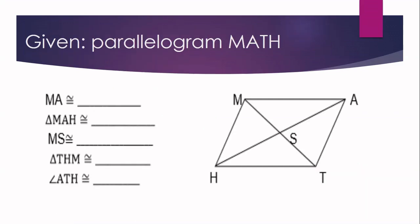Another activity: it is given that quadrilateral MATH is a parallelogram. We are going to complete the statements. Number one: MA is congruent to HT, because opposite sides of a parallelogram are congruent.